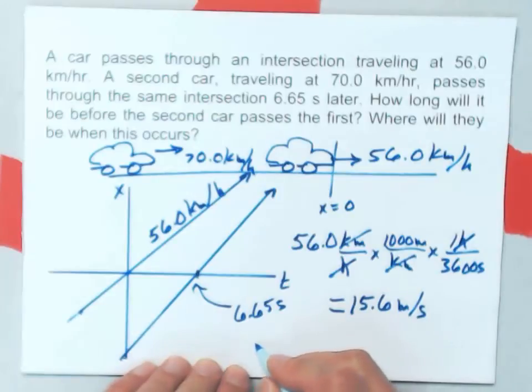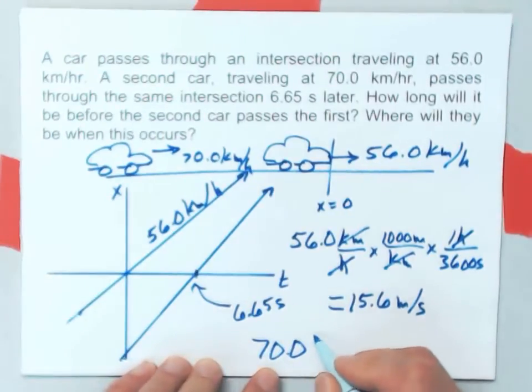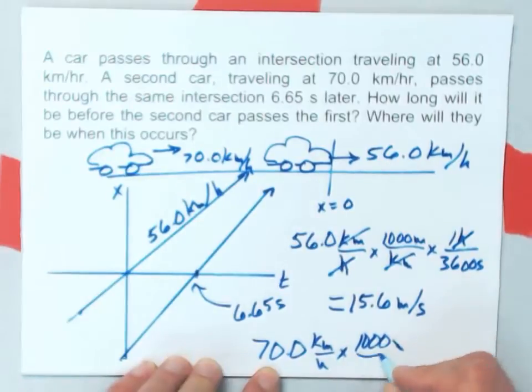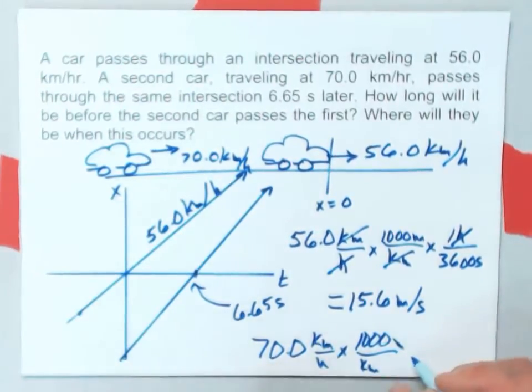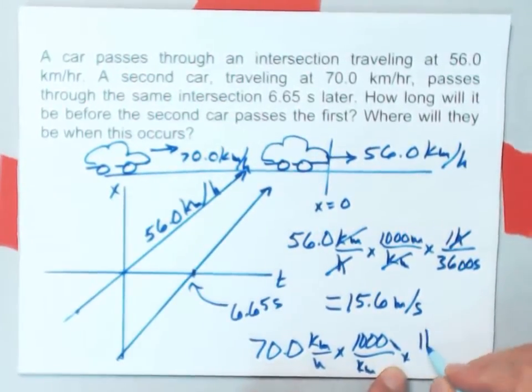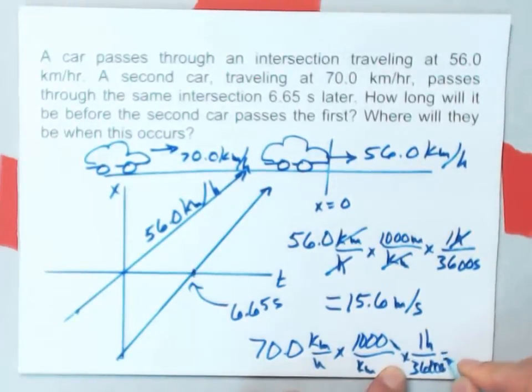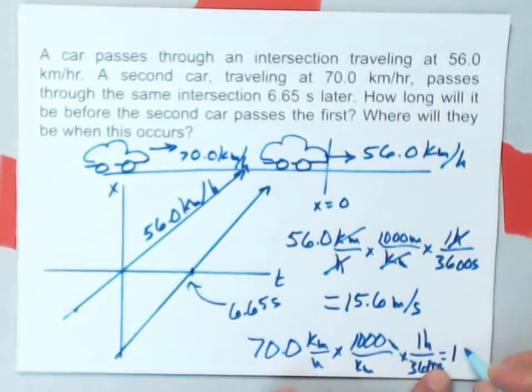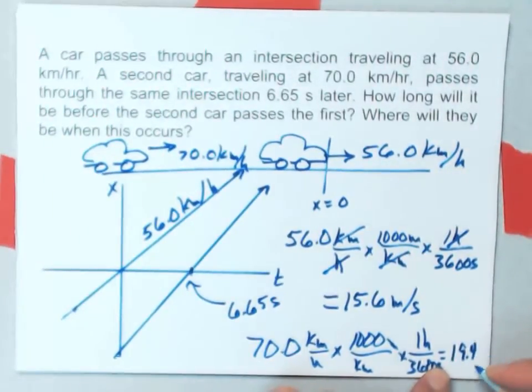The 70 kilometers per hour I would do the same thing with. Convert the units, 1,000 meters per kilometer, one hour over 3600 seconds. And this one is equal to 19.4 meters per second.